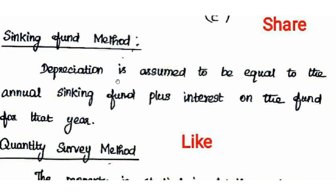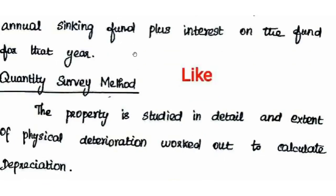In the Sinking Fund Method, the interest earned on the sinking fund is reinvested. Each year, the interest of the sinking fund is added to the fund. Depreciation is assumed equal to the annual sinking fund plus the interest on the fund for that year. The amount of interest accumulated each particular year is added to the fund.